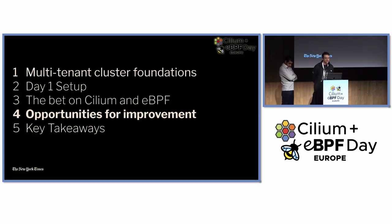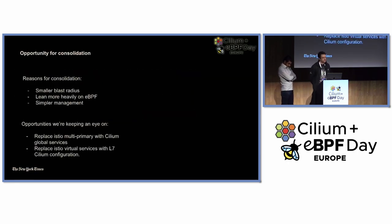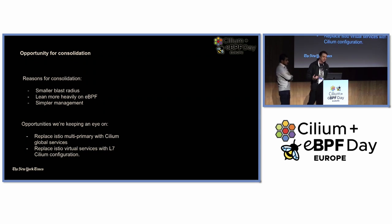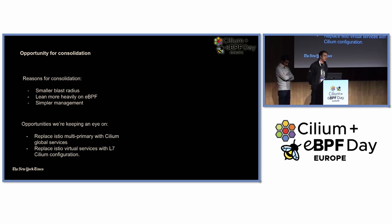Now I'm going to take a moment and talk about some opportunities we've identified for improvement. In general, reasons for consolidation in computer science are pretty obvious, but important to call out. It means a smaller blast radius for us to maintain, it allows us to lean more heavily on eBPF — Cilium in this case — and overall it's simpler management, easier to upgrade things. We've identified two main things we're looking to consolidate: replacing Istio multi-primary with Cilium global services, and replacing Istio virtual services with L7 Cilium configuration.